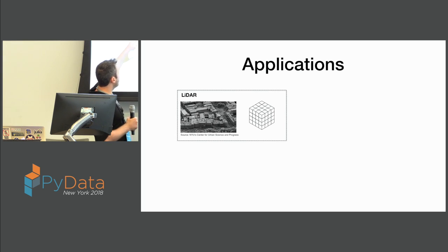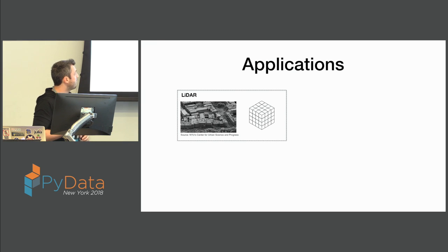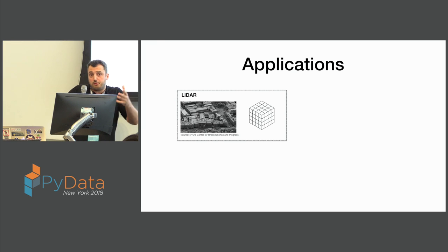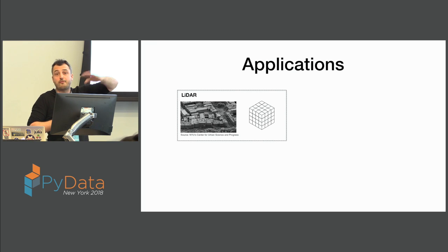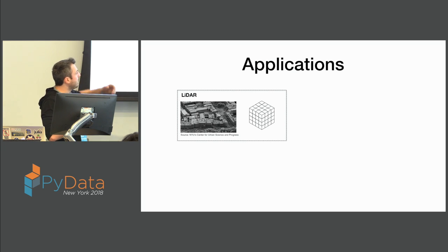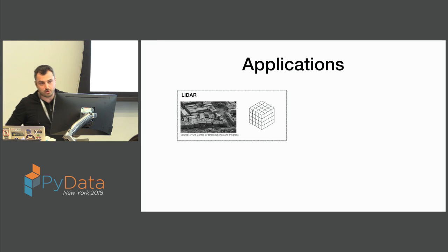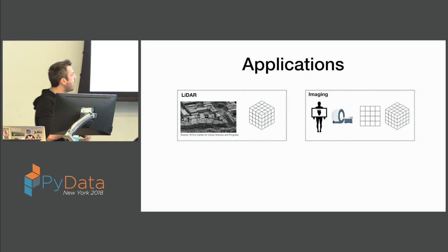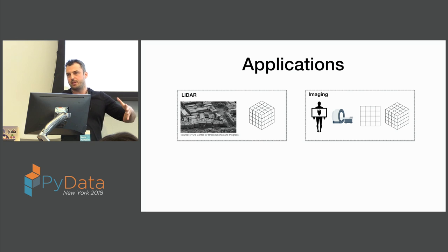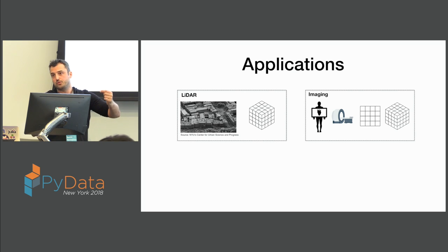I'll give a couple of applications that can be modeled as multi-dimensional arrays. First is LiDAR — this photo is from a cool project at NYU. LiDAR data are essentially three-dimensional points in an enormous space that form surfaces. This example is the city of Dublin. There is a lot of empty space because you don't store a LiDAR point for the air; you only store it for the surface of objects. So this is a huge three-dimensional sparse array.